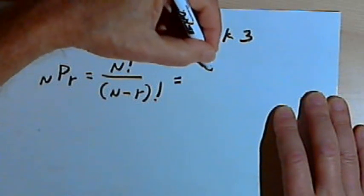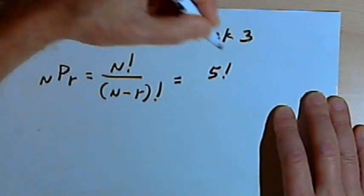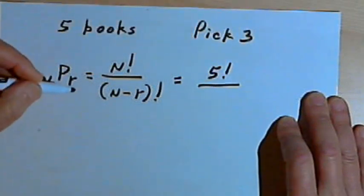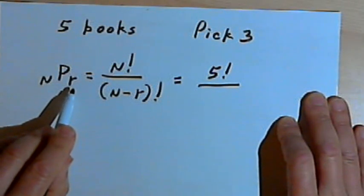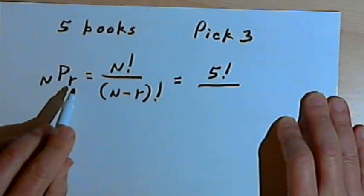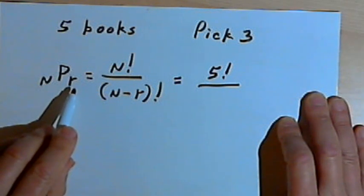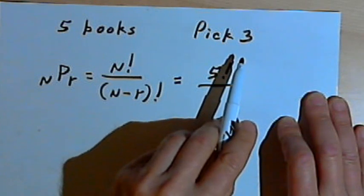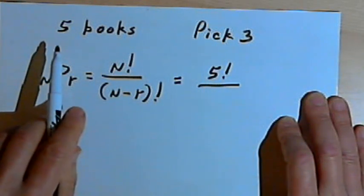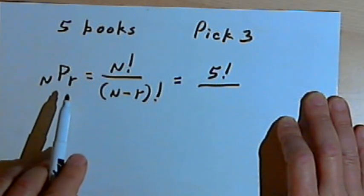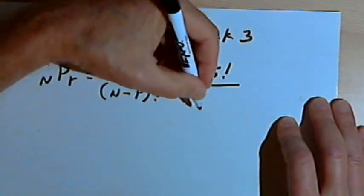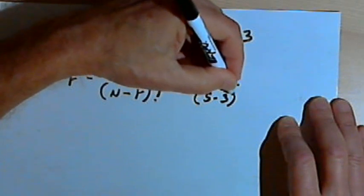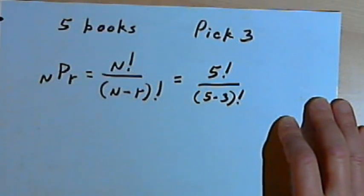So if we fill this in, n is 5, so n factorial is 5 factorial. And then the r is the number of elements that are going to be in each of the permutations. So we want three-book permutations, three-book arrangements of those five books, so r is 3. That means n minus r is going to be 5 minus 3, and then factorial sign after that.